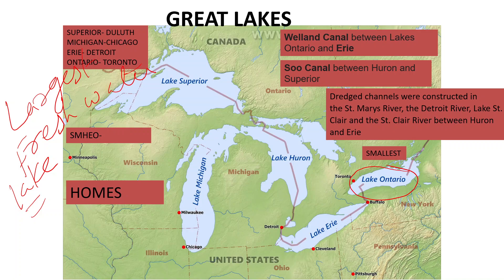All these lakes are interconnected through natural and sometimes artificial channels. For example, Erie and Ontario are connected through a canal known as the Welland Canal. Lake Superior and Lake Huron are connected through the Soo Canal. Lake Huron and Erie are connected through various natural and artificial channels. All these lakes are also connected with the St. Lawrence River, which discharges its water into the Atlantic Ocean — so all these lakes are ultimately connected with the Atlantic Ocean.